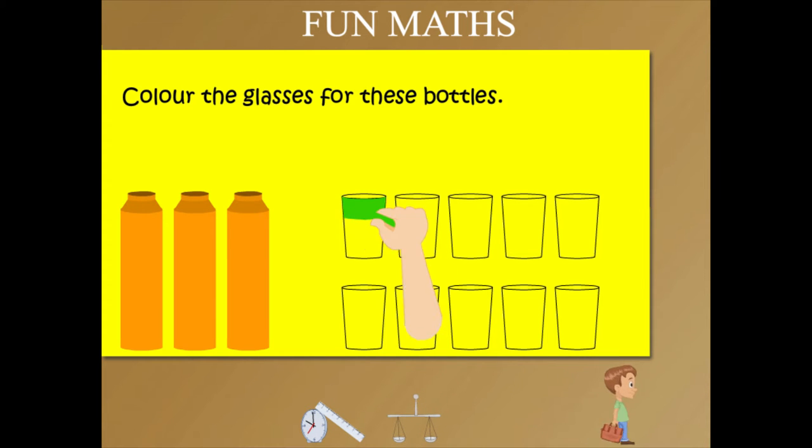Color the glasses. One, two, that is one bottle. Three, four, that is two bottles. And five, six, that is three bottles.